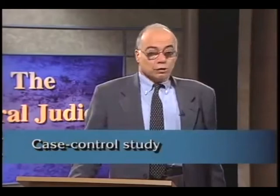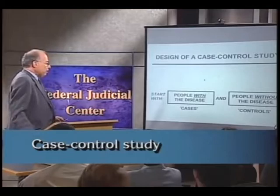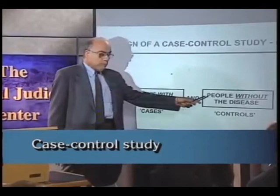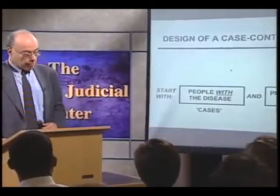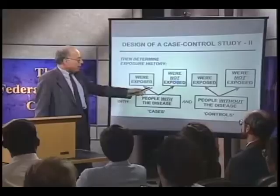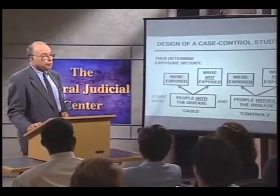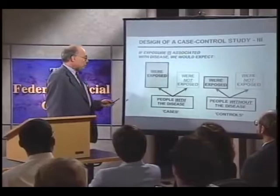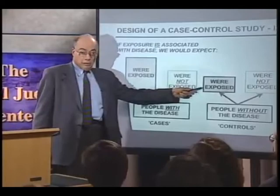The final study I'll discuss is the case-control study. In the case-control study, we begin with people who have the disease, called cases, and we identify people who don't have the disease for comparison, called controls — hence the name case-control study. We then determine the history of exposure: what proportion of people with the disease were exposed in the past, and what proportion of people without the disease were exposed in the past. If exposure is indeed associated with disease, we would expect a greater proportion of the cases to have had a history of exposure than of the controls.